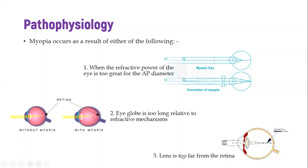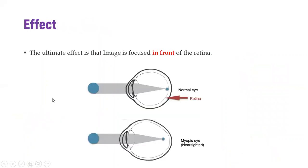The third possibility is the distance between the lens and the retina — if that distance is quite long, then light may converge before the retina. So those three points — having greater refractive power, a bigger or longer eye globe, and a longer distance between the lens and the retina — all ultimately lead to the image being formed in front of the retina.